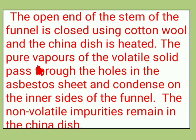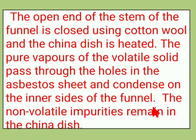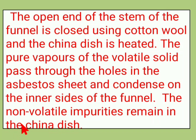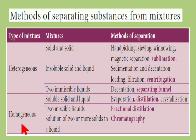The china dish is heated. The pure vapors of the volatile solid pass through the holes in the asbestos sheet and condense on the inner sides of the funnel. The non-volatile impurity, that is sand, remains in the china dish. Hence, sand and ammonium chloride can be separated by the process called sublimation.